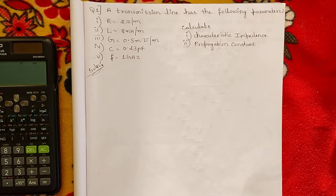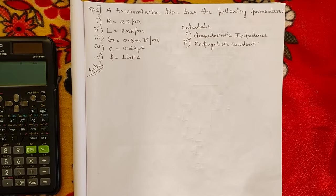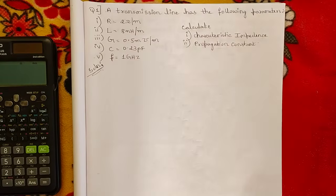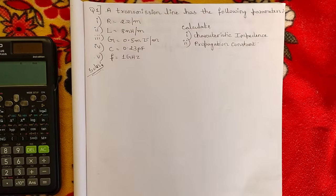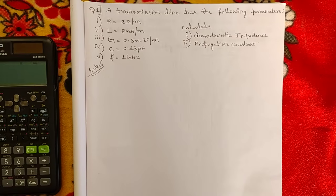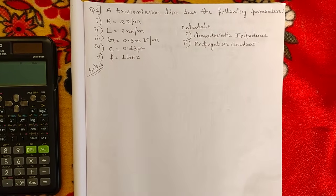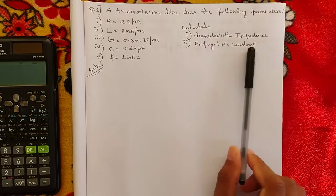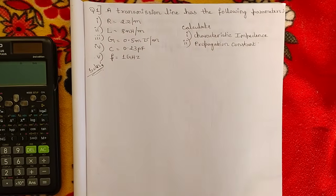After that we covered the concepts of reflection coefficient, transmission coefficient, along with voltage and current equations under transmission lines. We have discussed most of Module 1's concepts. The remaining few topics involve problems based on formulas from our previous videos: transmission coefficient, reflection coefficient, characteristic impedance, and propagation constant.